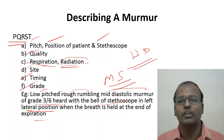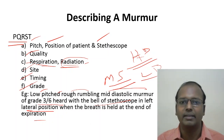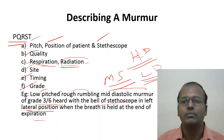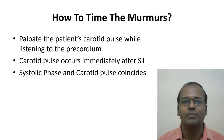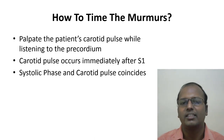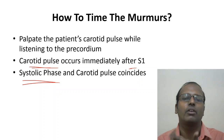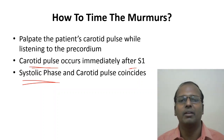To time a murmur: palpate the carotid with one hand and auscultate simultaneously. The murmur coinciding with the carotid impulse is systolic. The carotid pulse coincides with the systolic phase — so any murmur felt at the same time as the carotid impact is a systolic murmur. This is how you clinically time murmurs.